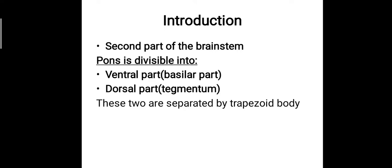The pons is divisible into two parts: the ventral part or the basilar part, and the dorsal part or the tegmental part. These two are separated by a structure known as the trapezoid body.